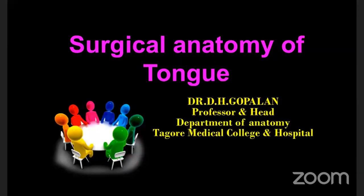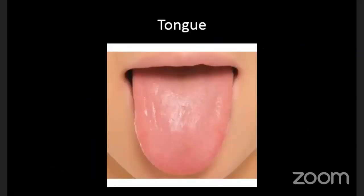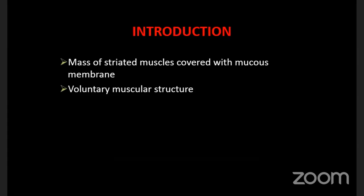Good evening. Today we are going to discuss the surgical anatomy of the tongue. The tongue is a mobile muscular organ in the oral cavity, and it is one of the least visible skeletal muscles in the body. That's why it is used in many clinical conditions, even to look for certain clinical signs like fibrillation. It is a mass of striated muscles covered with mucous membrane, and it is voluntary in nature.